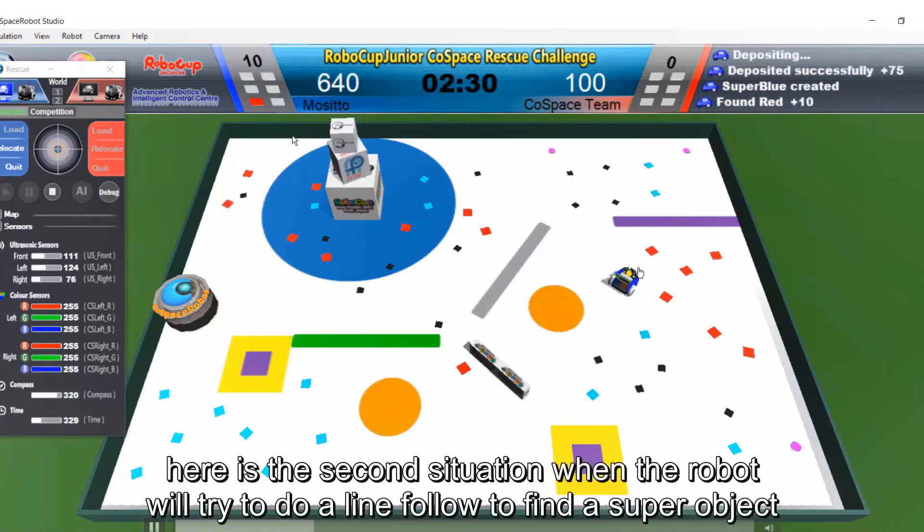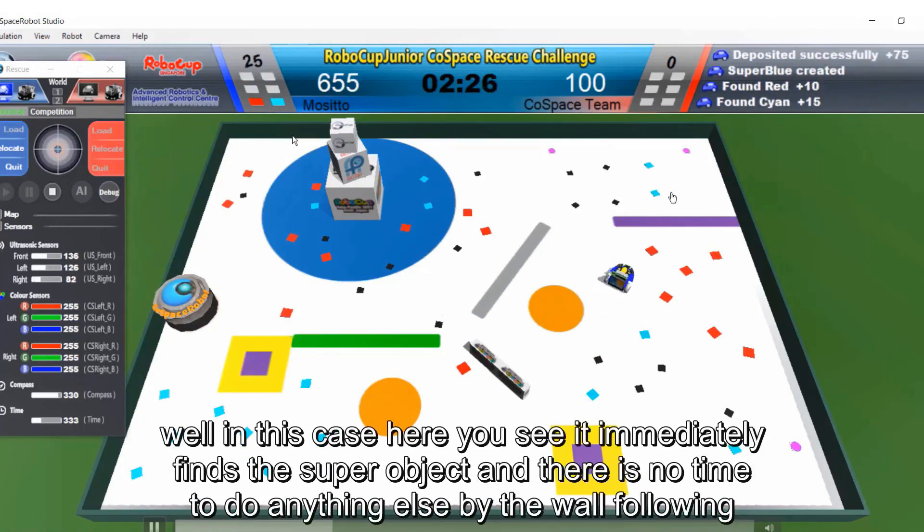Here is the second situation when the robot will try to do a wall follow to find the super object. Well, in this case, here you see, it immediately reaches the super object and there is no time for it to do anything else like the wall following.